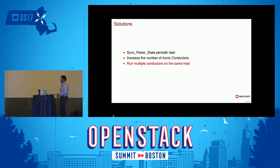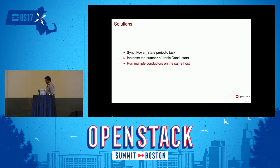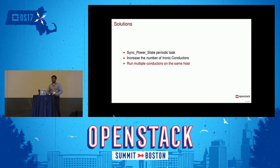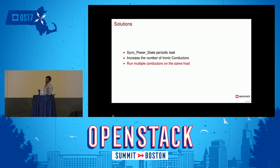The problem with running multiple conductors on the same host is there could be race conditions. There is another periodic task called sync local state in Ironic conductor — if one conductor dies, it checks whether it needs to take over nodes managed by the dead conductor. Since we hadn't tested that scenario, we disabled sync local state and instead ensure conductors are up with better monitoring. We are now running around 40 conductors per host, so 80 conductors in one cluster managing things.